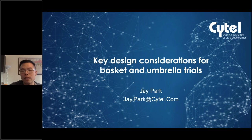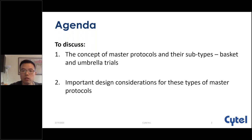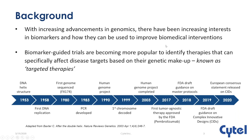I'm very excited to talk about some of the new advancements that we have made in terms of methods under the master protocol — what's called basket and umbrella trials. I have two objectives for today: first, to discuss the concept of master protocols and subtypes in basket and umbrella trials, and second, to discuss some of the important design considerations. Ever since 1953, when we first discovered the actual structure of DNA, we have made various key milestones and advancements in genomics. There is now a rising interest in biomarkers and how they can be used to improve biomedical interventions and develop targeted therapies towards more precision medicine and precision oncology efforts.